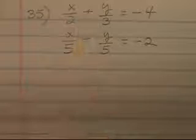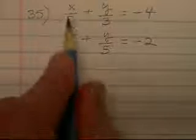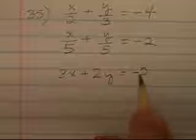I don't like these fractions here. I'm going to multiply the top equation by 6. Multiplying the top equation by 6 will give me 3x plus 2y equals negative 4, 24.